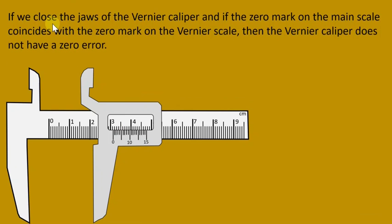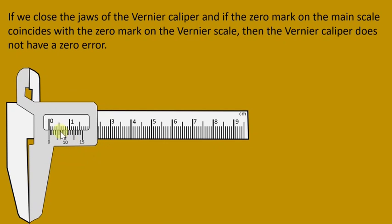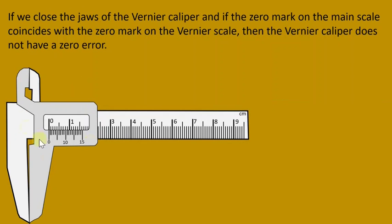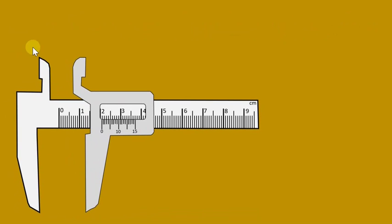If we close the jaws of the Vernier caliper and the zero mark on the main scale coincides with the zero mark on the Vernier scale, then the Vernier caliper does not have a zero error. If the zero mark on the main scale coincides with the zero mark on the Vernier scale — meaning they form a straight line — then there is no zero error in this Vernier caliper.